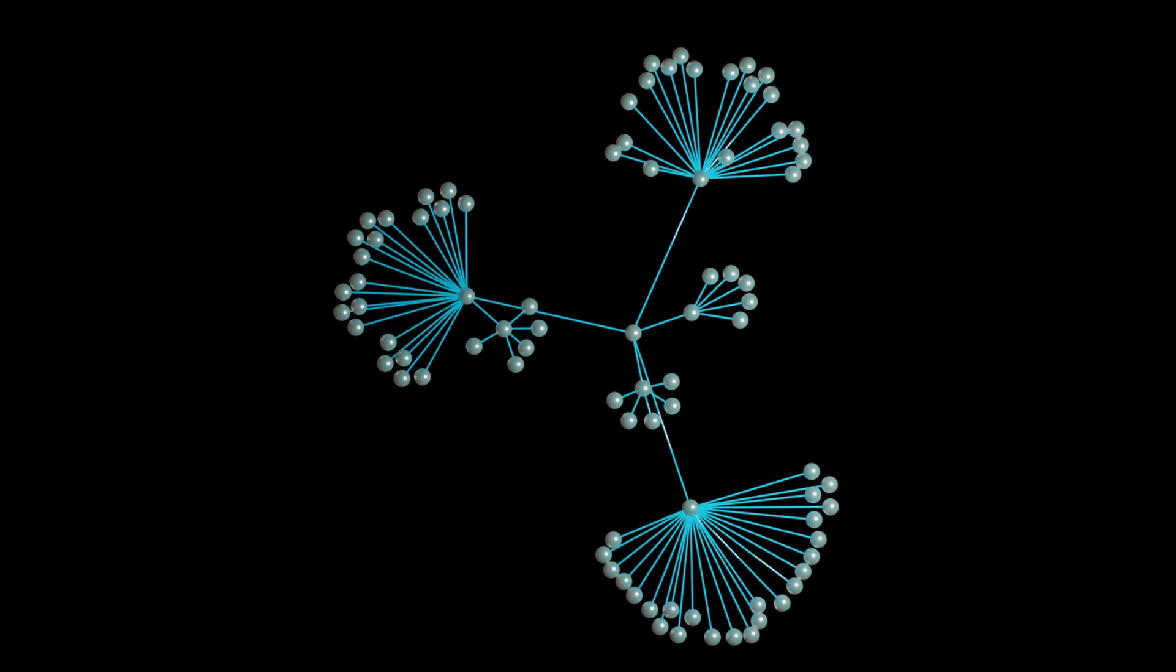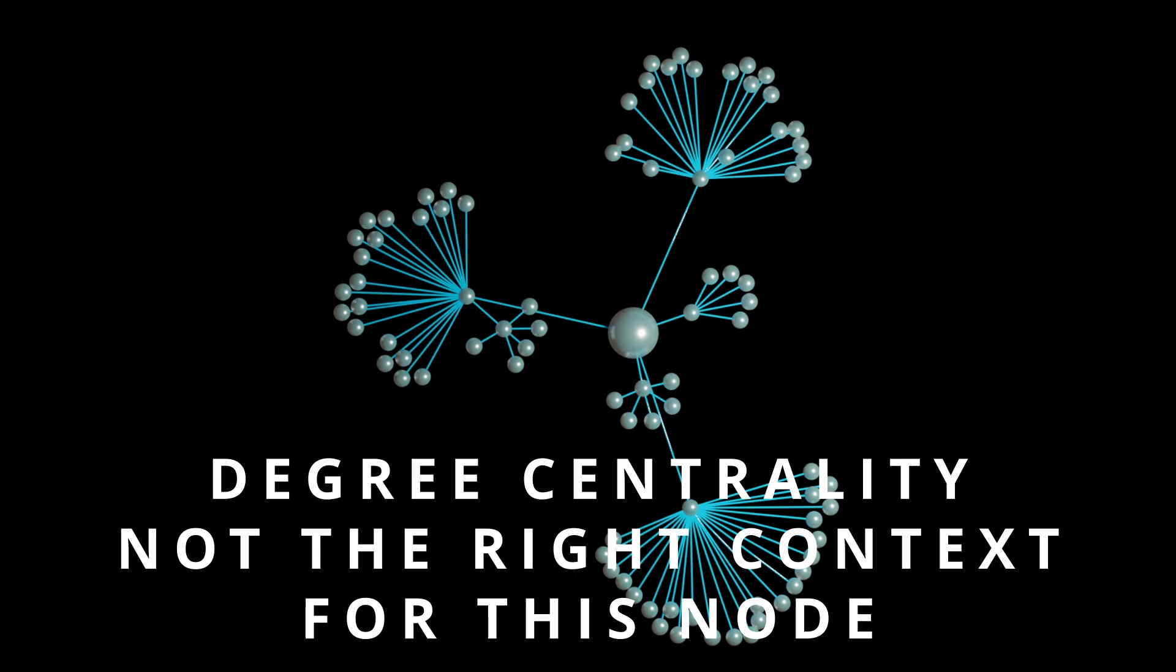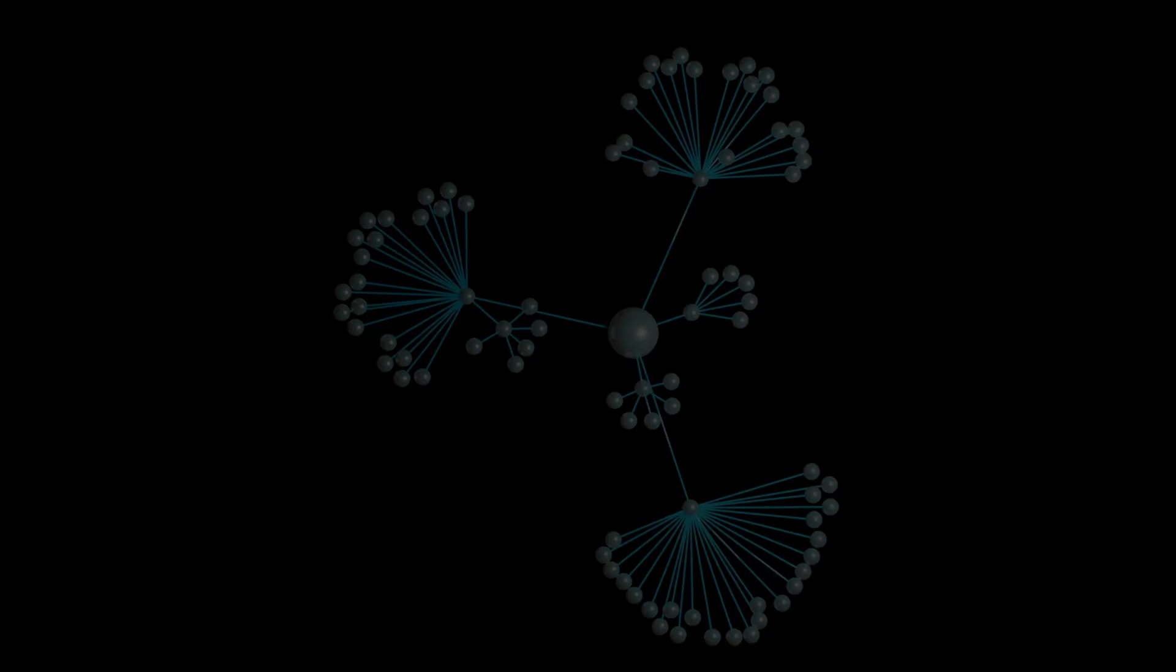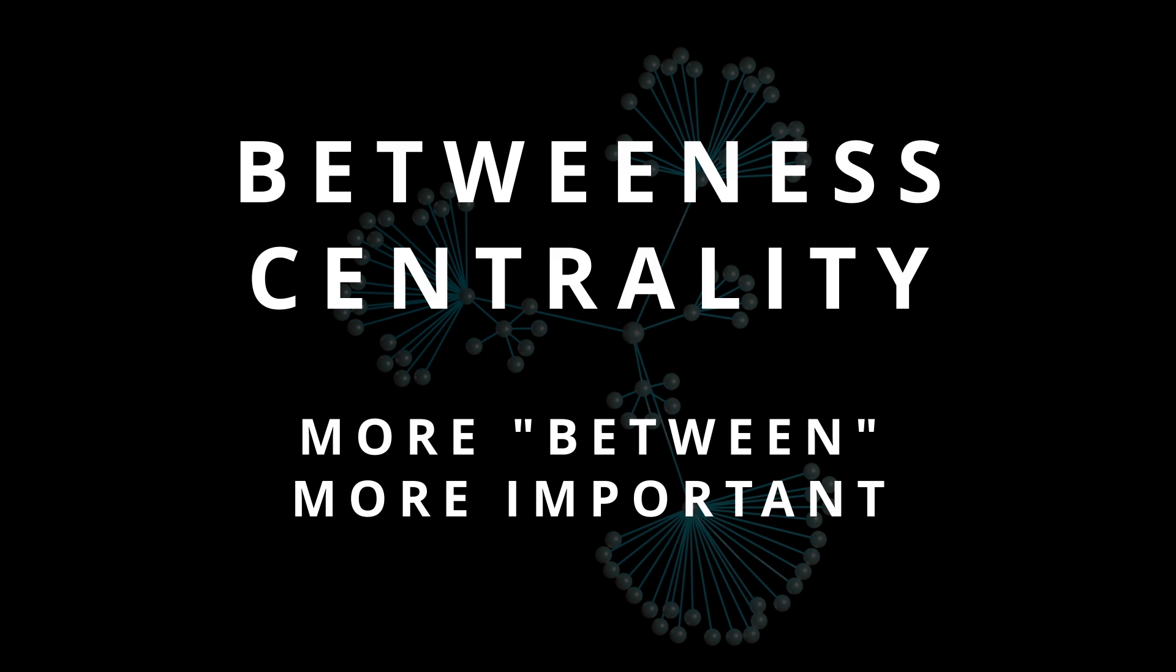But what about this node in the middle? Sure, the number of links it has is very low, but it connects the hubs and in large part dictates how the network flows. This seems like a pretty important thing you'd want to consider, but it's not reflected in the degree centrality at all. This is because degree centrality does not capture the context in which this node is deemed important. Instead, you'd have to use a different centrality measure to identify it, namely the betweenness centrality, which measures how much a node, well, stands between other nodes.